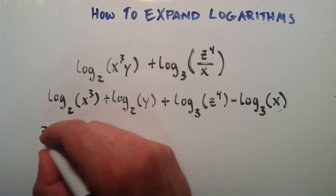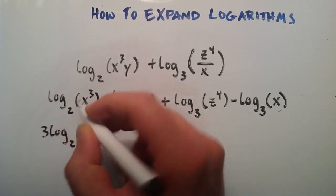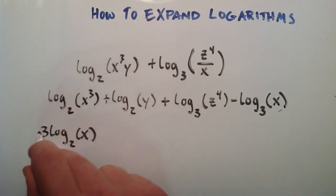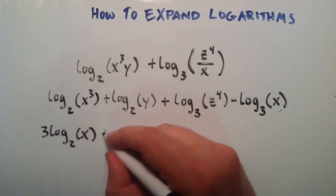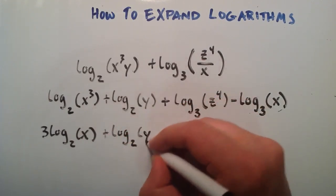And so this becomes 3 times log base 2 of x. The 3 got moved out front, and everything else stayed in the same spot. And log base 2 of y is already simplified, so we're just going to leave it.